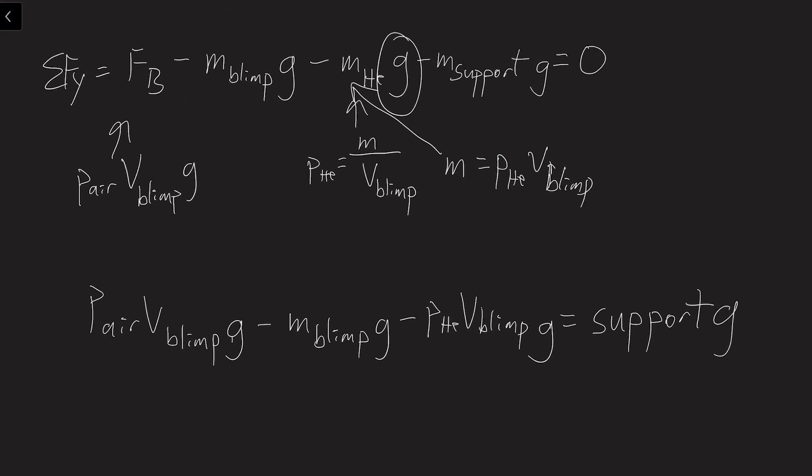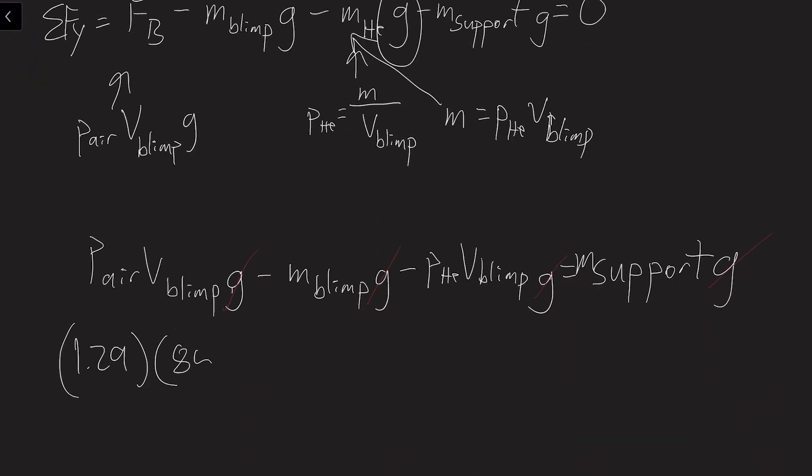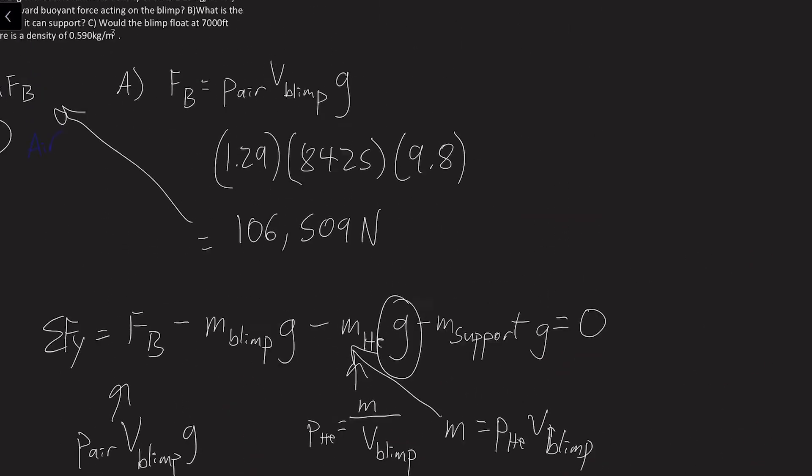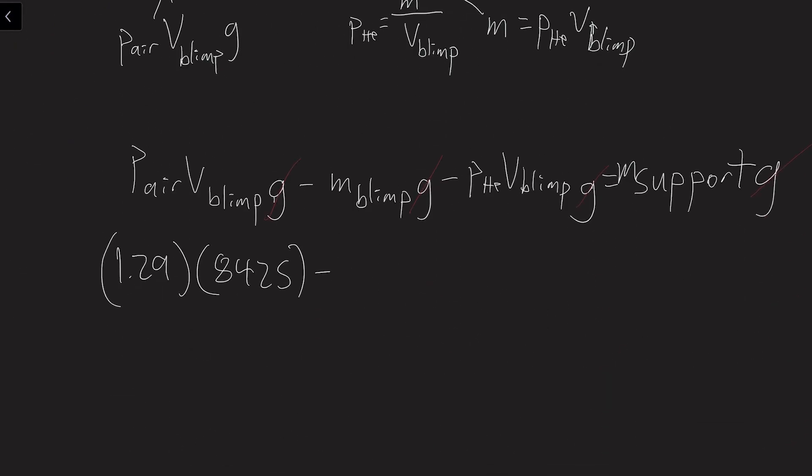If you see all these terms have a gravity in them, then when you are going to be dividing the gravity over, if you were to solve for the mass, it would cancel with all these. So the gravities can cancel here. Then we can plug in. So density of air, 1.29. The volume of the blimp was 8,425. Then we subtract the mass of the blimp, which is up here in the problem. That is 8,972 kilograms.